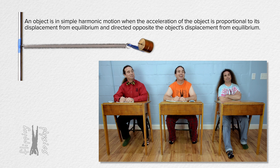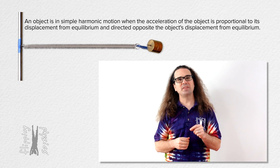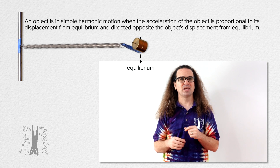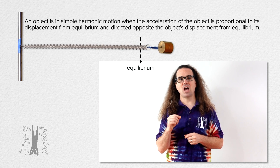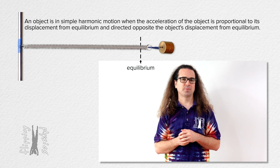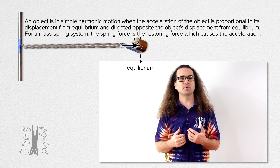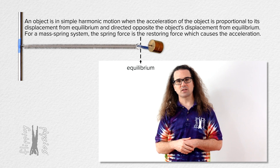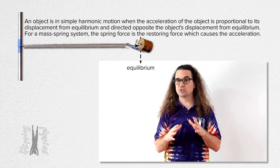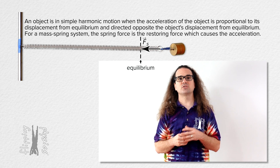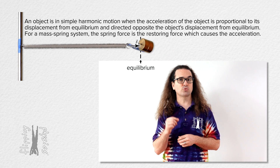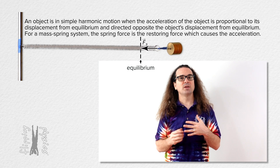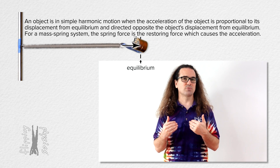We have already learned that an object is in simple harmonic motion when the acceleration of the object is proportional to its displacement from equilibrium and is directed opposite the object's displacement from equilibrium. For a mass spring system, the spring force is the restoring force which causes this acceleration. Recall that a restoring force is always directed toward equilibrium, and the spring force is always directed toward equilibrium, which is why the spring force is the restoring force.